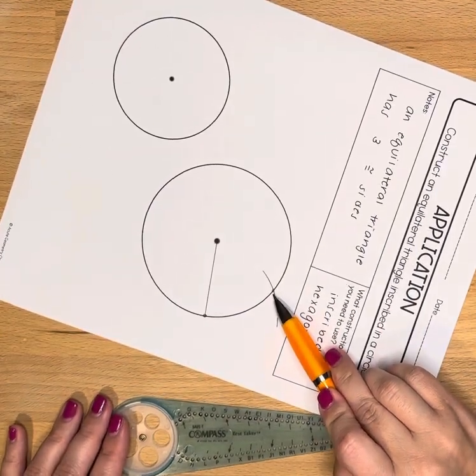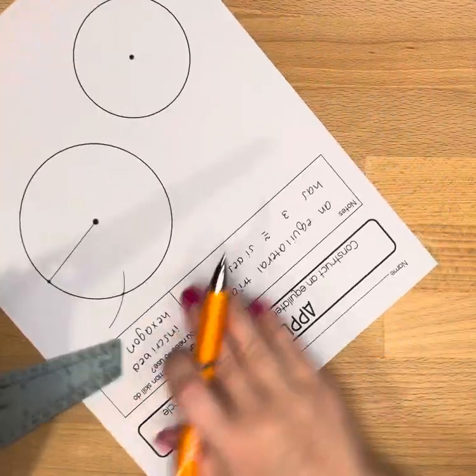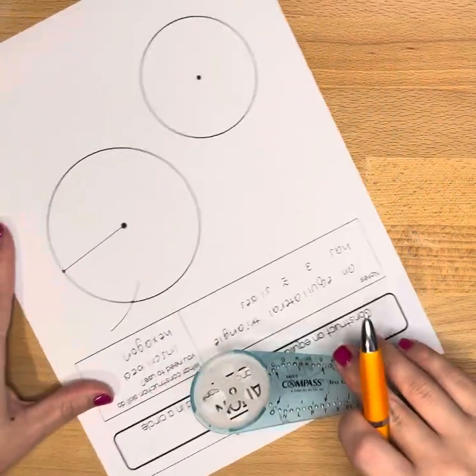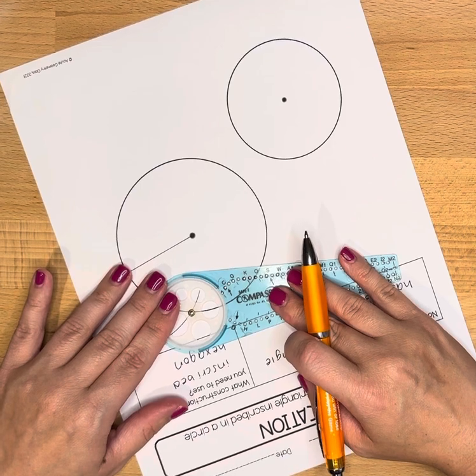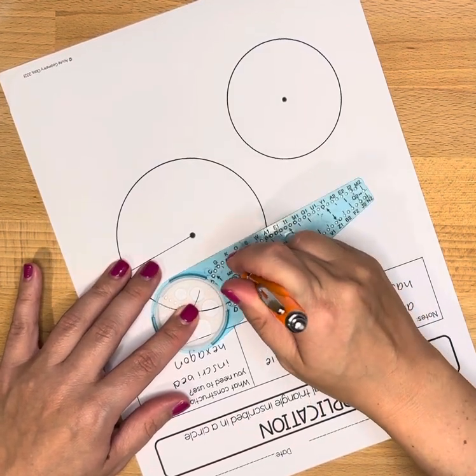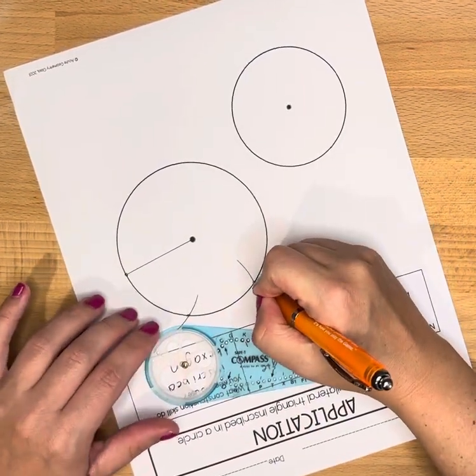Now you have a new point where the arc intersected the circle. The gold ring of your compass is now going there. Use the same measurement, get a new point.